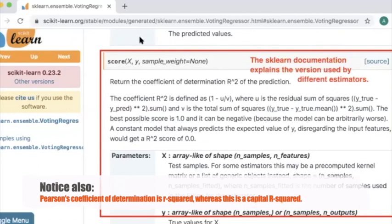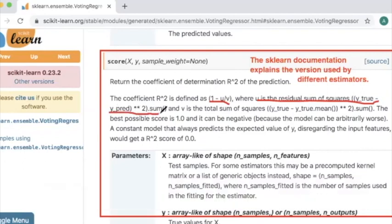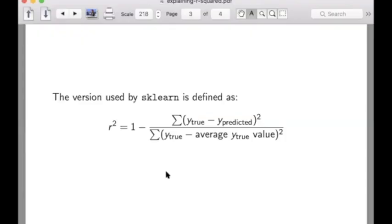So it's 1 minus u over v, where u is the residual sum of squares, which is y-true minus y-predicted, squared sum. And v is the total sum of squares, y-true minus y-true mean, squared sum.